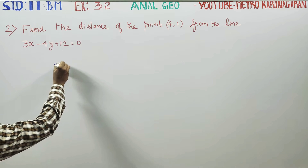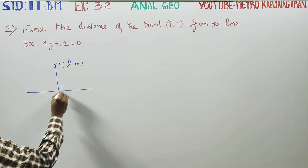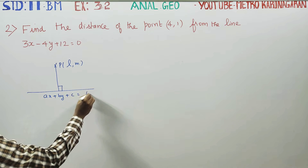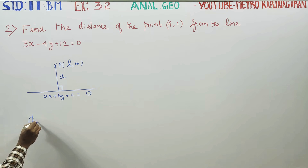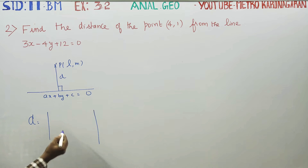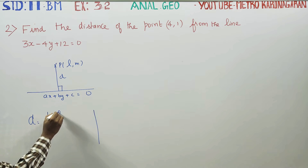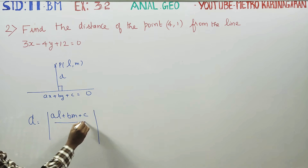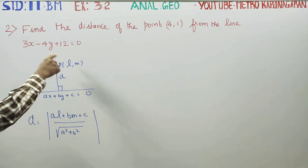Our point is L, M and this is our line. In the line formula ax + by + c = 0, the distance from a point to the line is equal to modulus of ax₁ + by₁ + c, divided by the square root of a² + b². The modulus gives a positive answer. This is the distance from a point to a straight line.